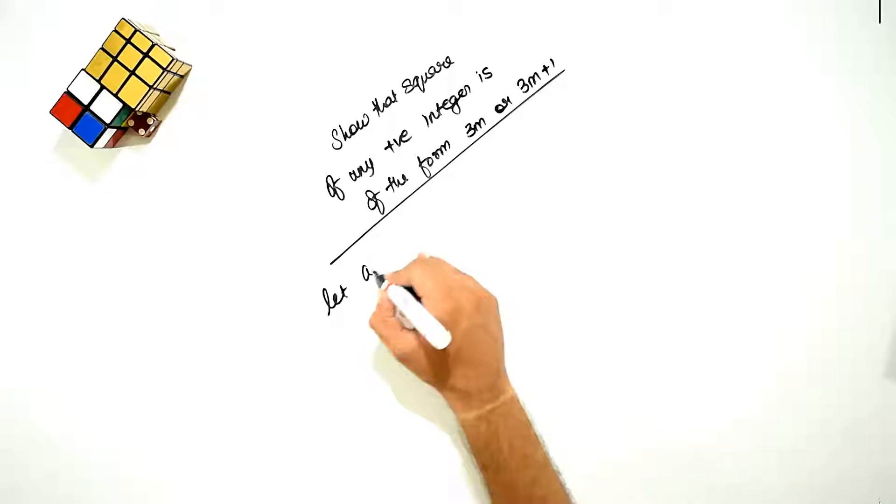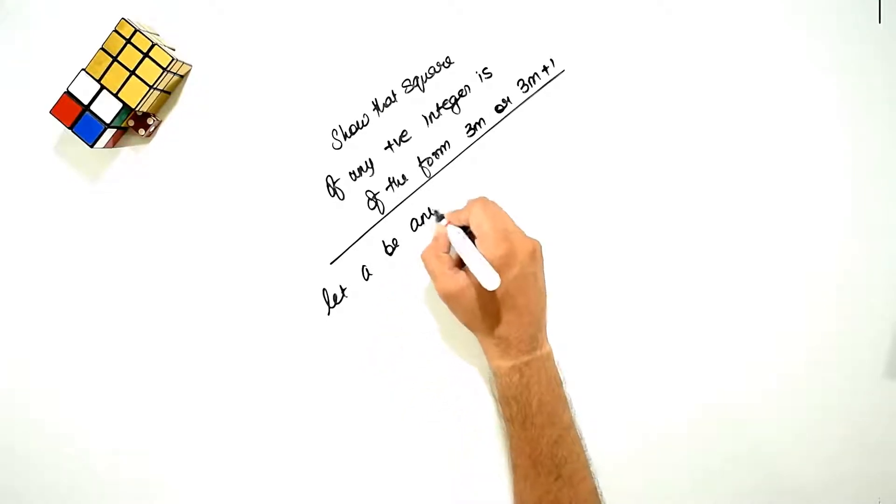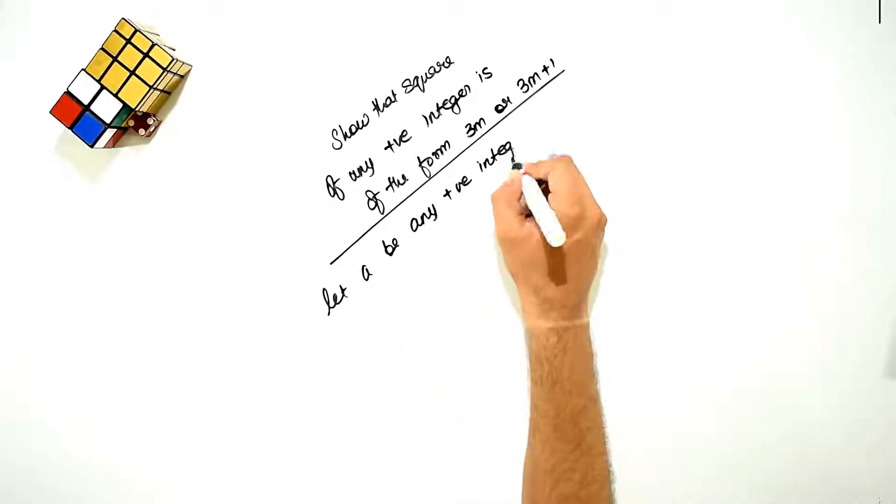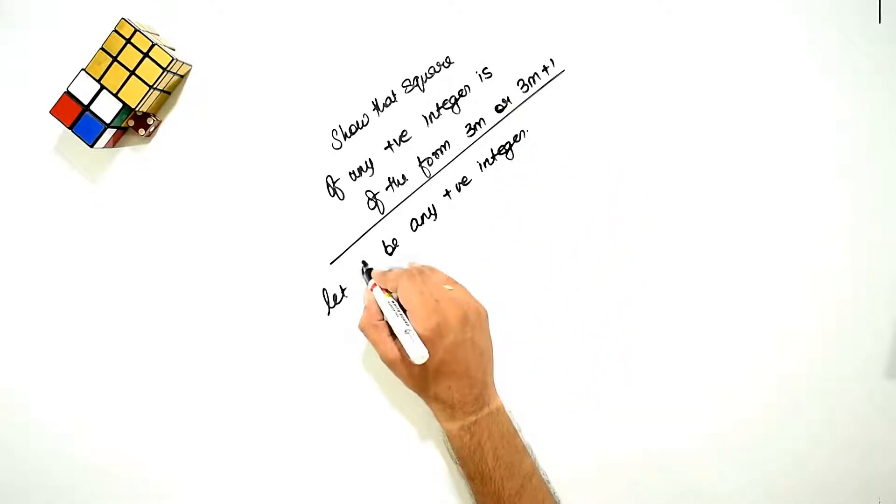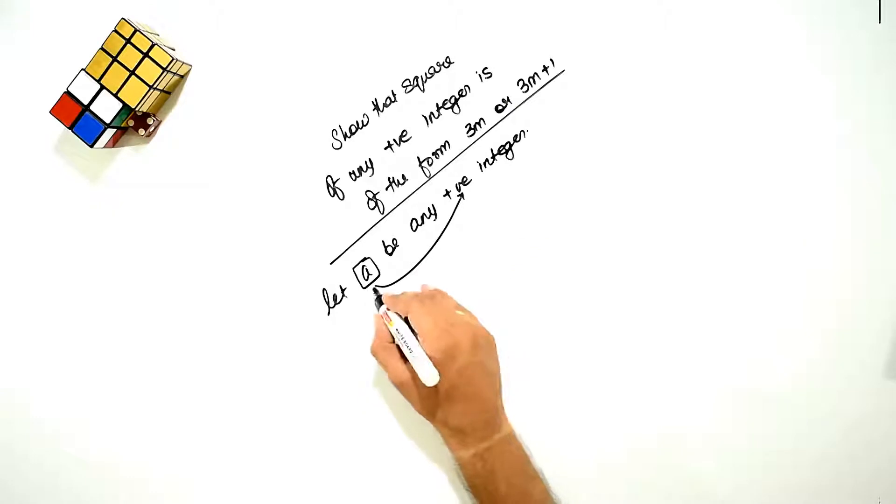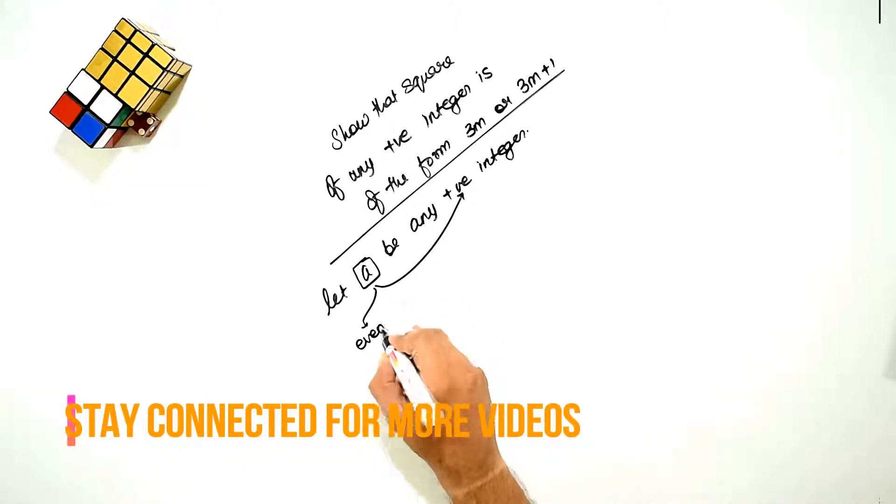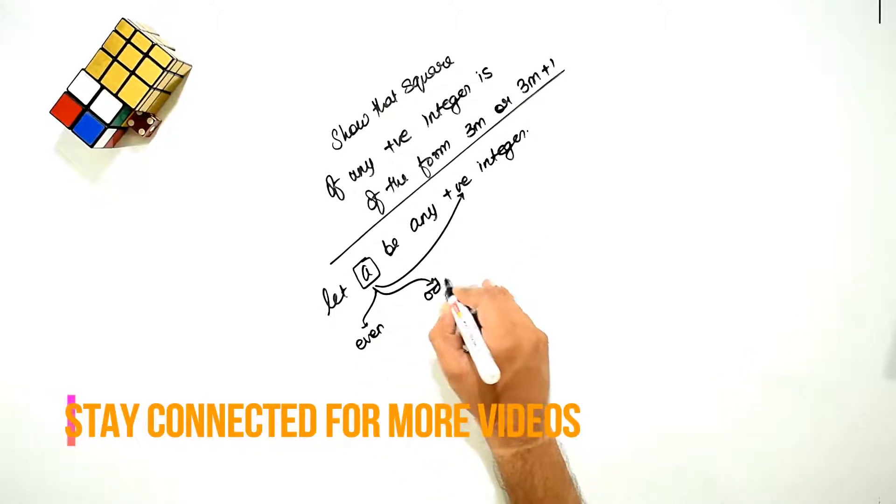Let a be any positive integer. We have to assume that it is a positive integer, even or odd.